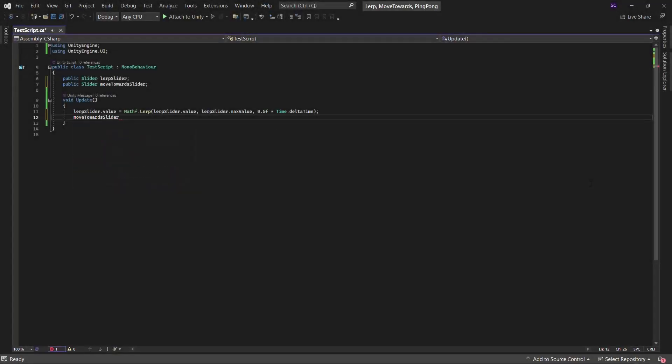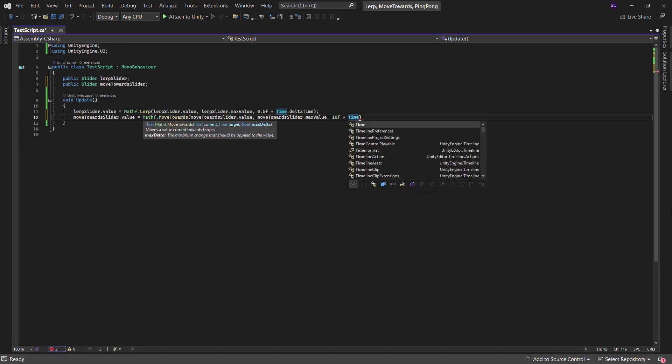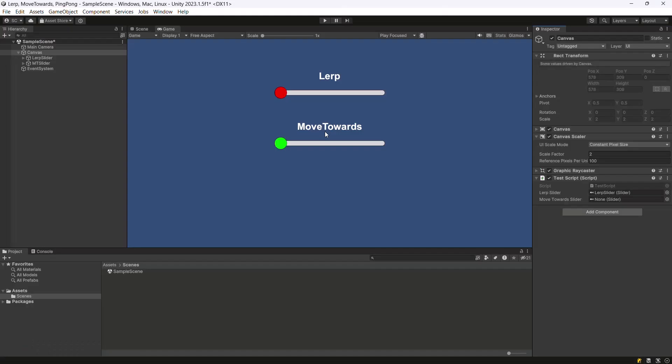We will update the MoveTowards slider value by passing the slider's current value, max value, and an increment of 10 units per second. Go back to the scene, assign the slider, hit play, and you will see the handle moving at a constant speed.